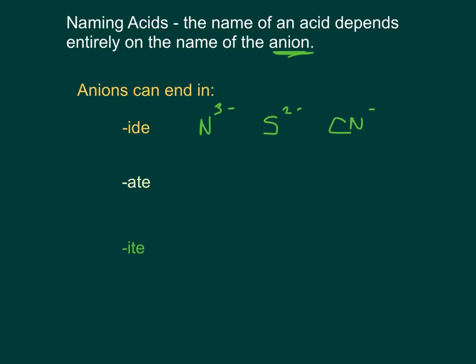Anions can end in -ate, like sulfate, or nitrate, or phosphate.